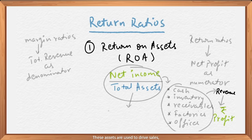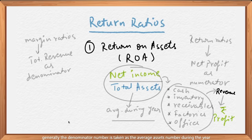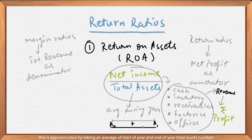These assets are used to drive sales, which increases total revenue and eventually trickles down into net income. As a point here, generally the denominator is taken as the average assets number during the year, approximated by averaging the start-of-year and end-of-year total assets numbers.